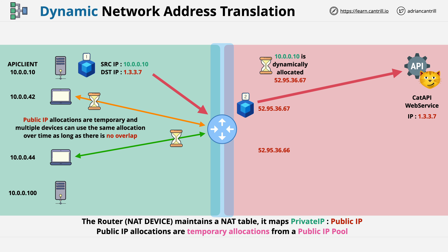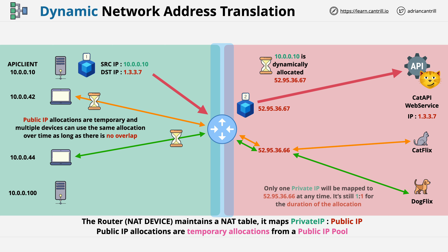So as long as the devices use the allocations at different times. In this case, the upper laptop is accessing the CATFLIX public service using 52.95.36.66, and then afterwards, the lower laptop is using the same public IP address to access the DOGFLIX application.